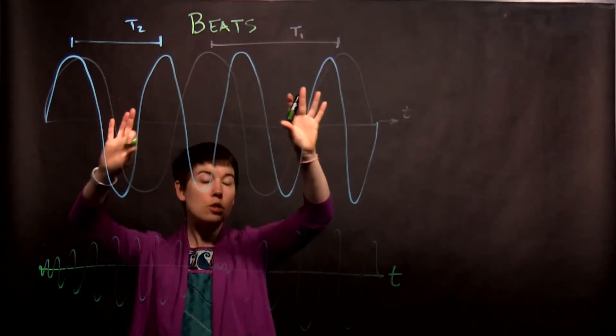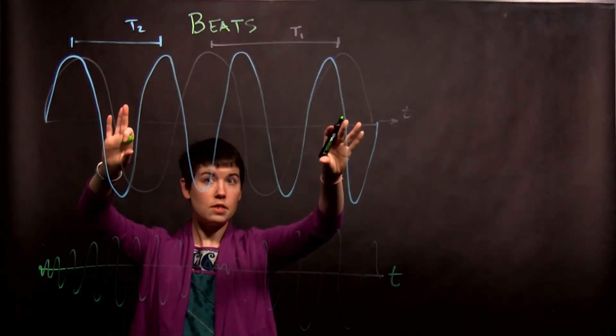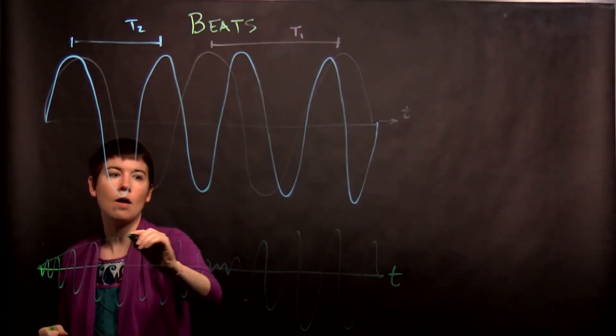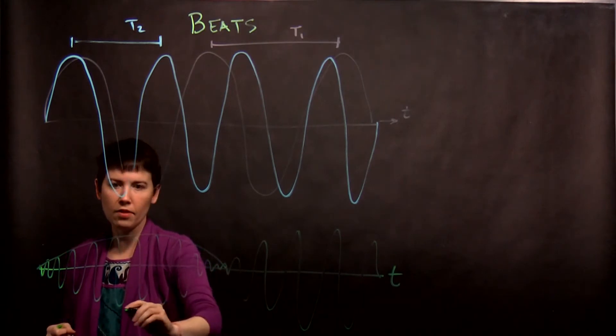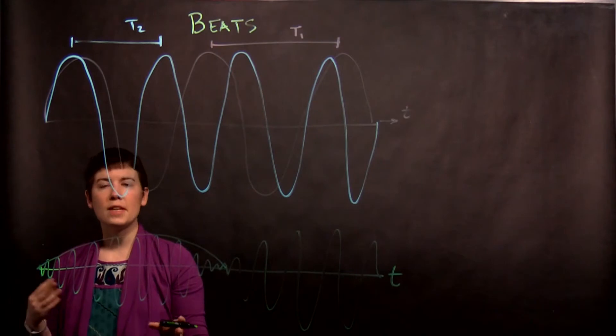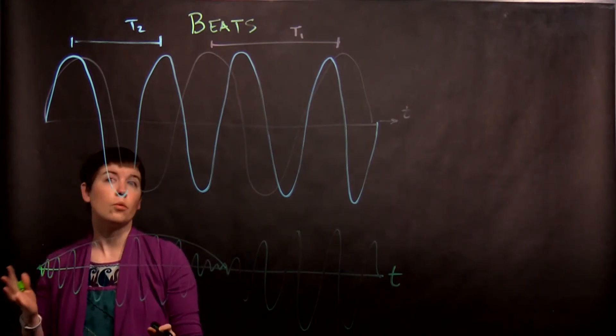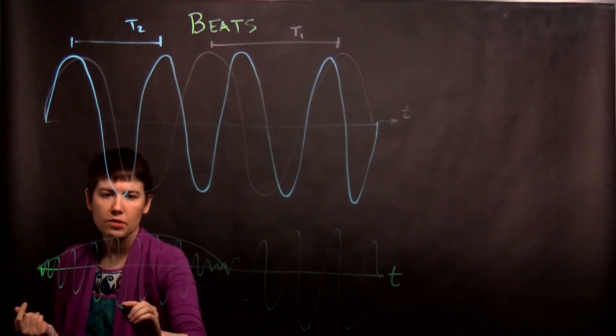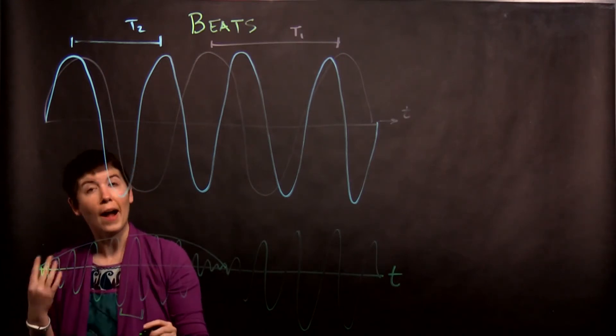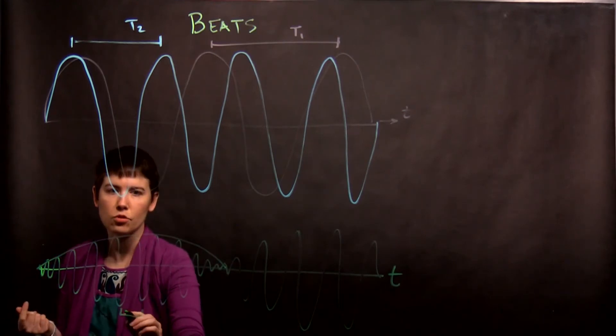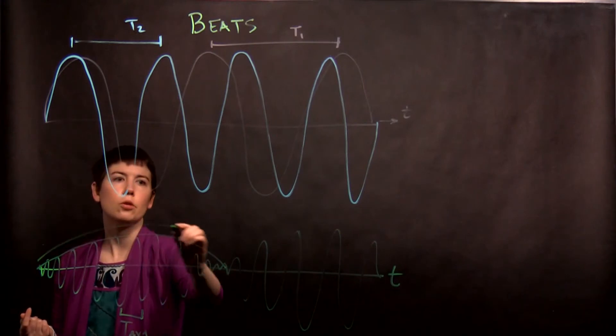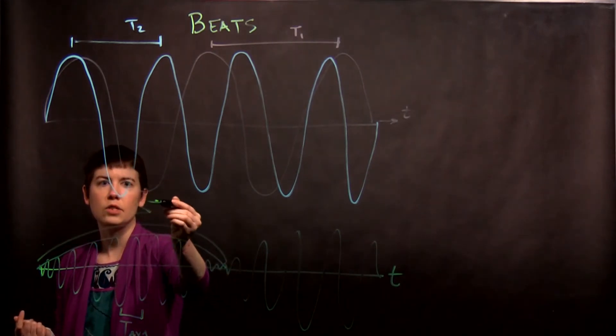So beats is this idea that we have the two different frequencies and when we add them together you now get this. Notice that there's this envelope here and then there's this little squiggle on the inside. When we think about this we can think about frequency or period, but this here is basically going to be given by your average frequency or average period, and then this big envelope is given by the difference.